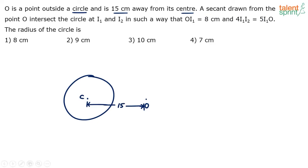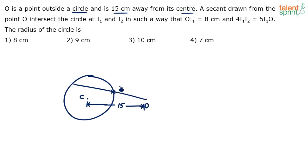A secant is drawn from point O, which intersects the circle at two points. A secant is a line drawn from an external point that intersects the circle at two points. From point O, this line intersects the circle at I1 and then at I2.